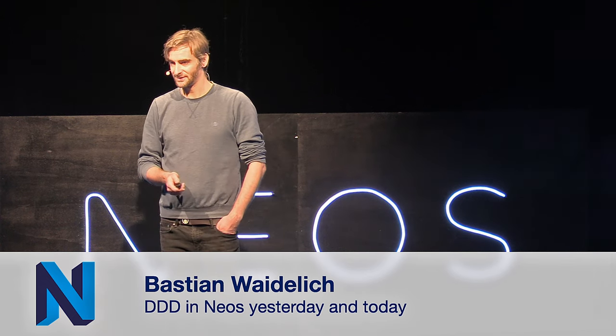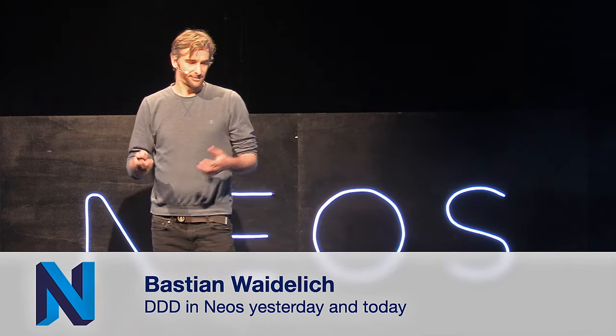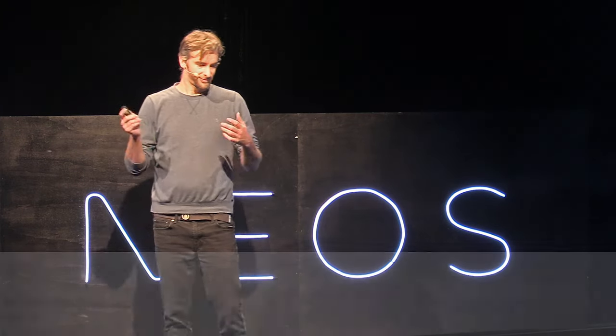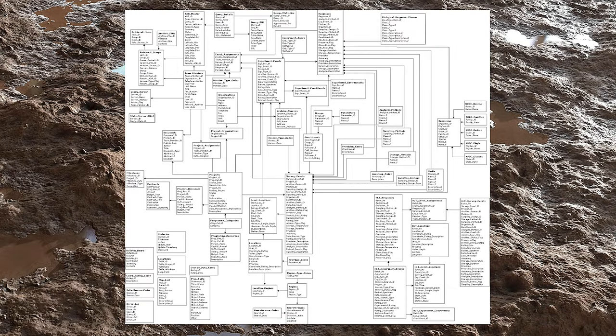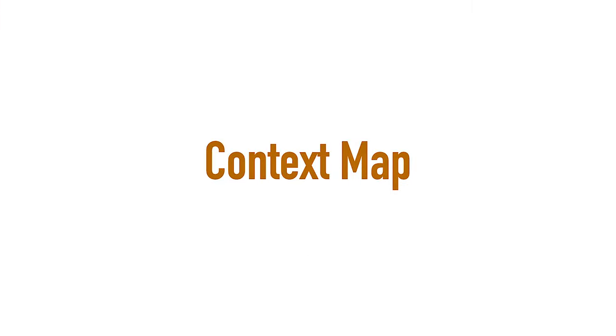Then give it boundaries. Because without boundaries, you can start with a relatively easy thought model, then you add concepts and features, and all of a sudden you end up with this big ball of mud. No one is able to grasp it anymore, and no one dares to touch it. So my first takeaway for you: if you start a new project, create a context map.